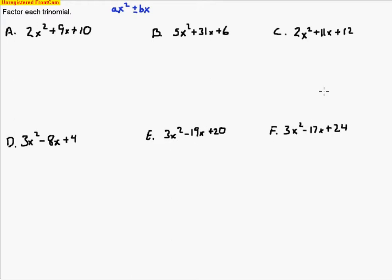On your homework tonight you'll see one of the two. But your last term is going to be positive tonight. Whenever that last term is positive, it tells us that the outer and inner terms are going to end up adding together. And when we add them together, we're going to end up getting our b term — whether it's a positive or negative b term. The important thing to remember is that we're adding the outer and inner terms today.